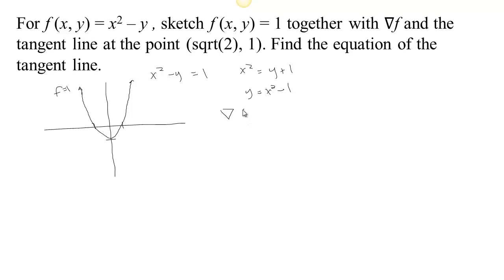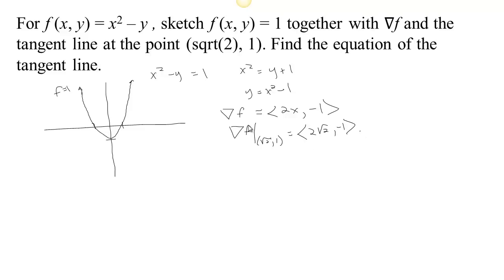Now we're going to calculate the gradient of f. Looking at x² - y, the gradient would be the derivative with respect to x, which is 2x, and the derivative with respect to y, which is -1. So the gradient of f at our particular location — at (√2, 1) — is equal to (2√2, -1). The point √2 ≈ 1.4, so it's about halfway between 1 and 2 on the x-axis, and y = 1.